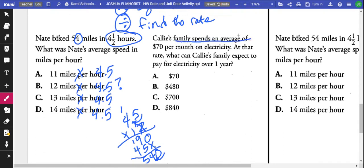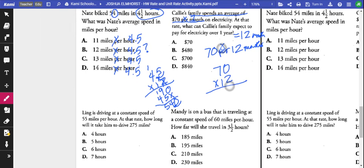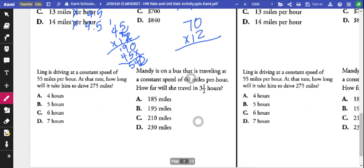Callie's family spends an average of $70 per month. At that rate, what can Callie's family expect to spend on electricity for one year? One year is 12 months. So we have 70 per 12 months. So that means you're going to multiply 70 times 12.